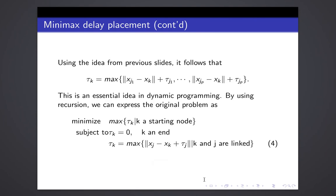Using the idea from the previous slide, it follows that t_k is determined by all the possible next nodes. This is the essential idea in dynamic programming. By using recursion, we can express the original problem as follows, as in formula 4.